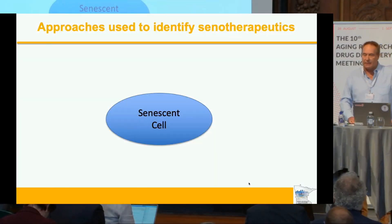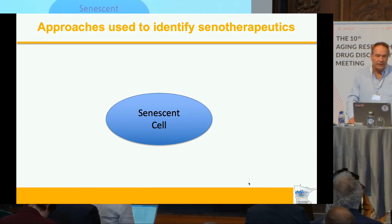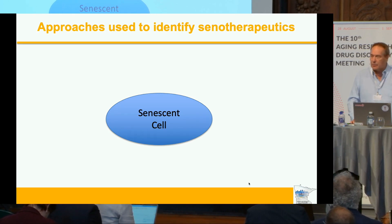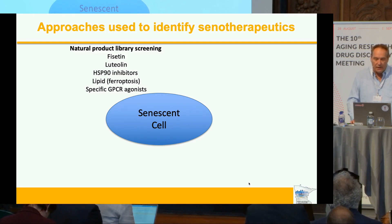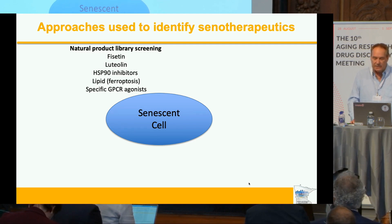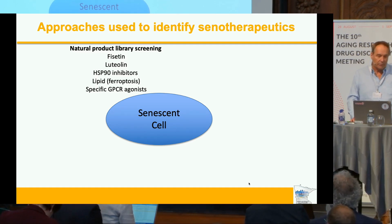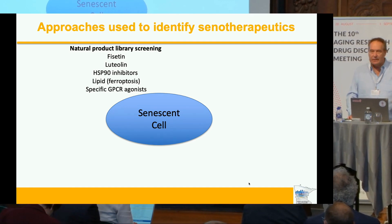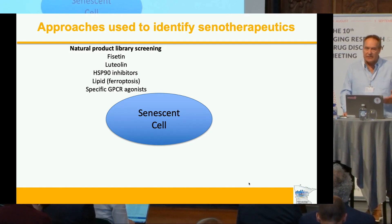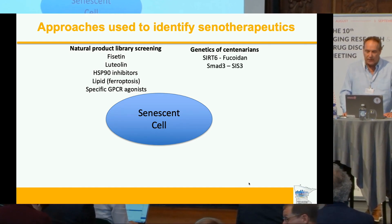The focus of my lab for the last ten years or so has really been trying to develop ways to eliminate or suppress senescent cells. To summarize ten years worth of work and a lot of postdoc and graduate student years, we have used a number of different approaches to identify different types of senolytics. We screened natural product libraries and identified fisetin, luteolin, and other compounds. Fisetin, as you know, was in multiple clinical trials.